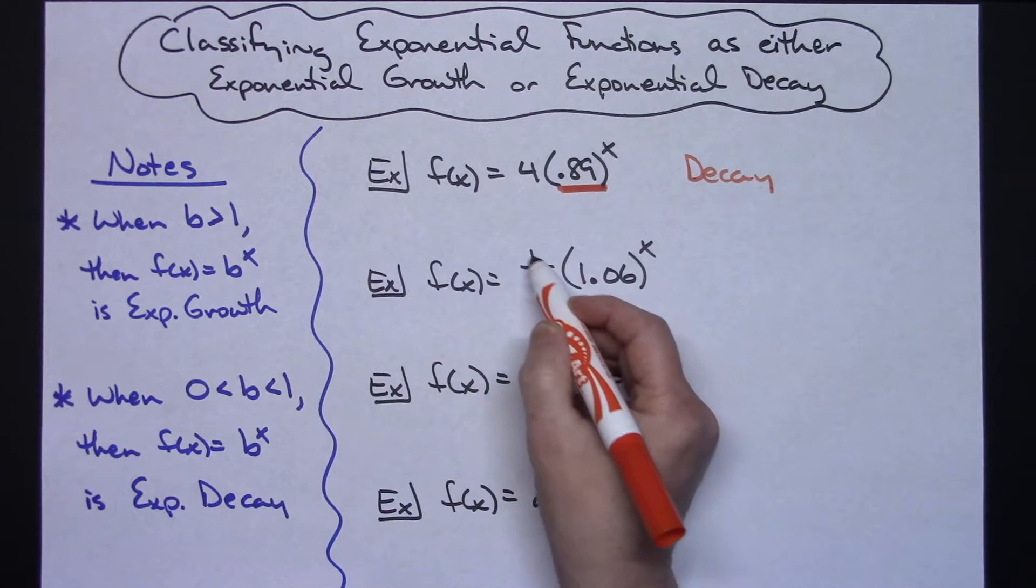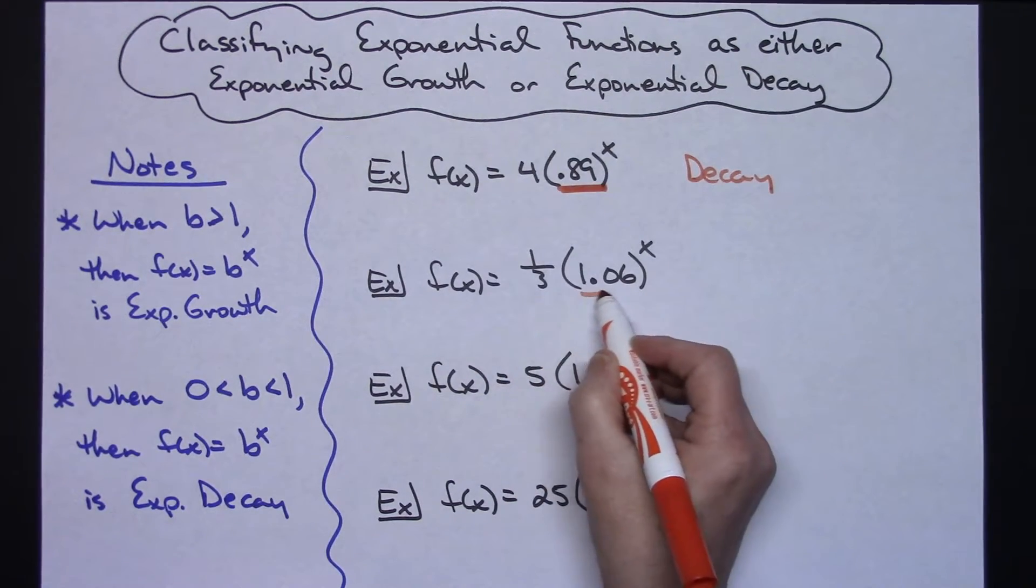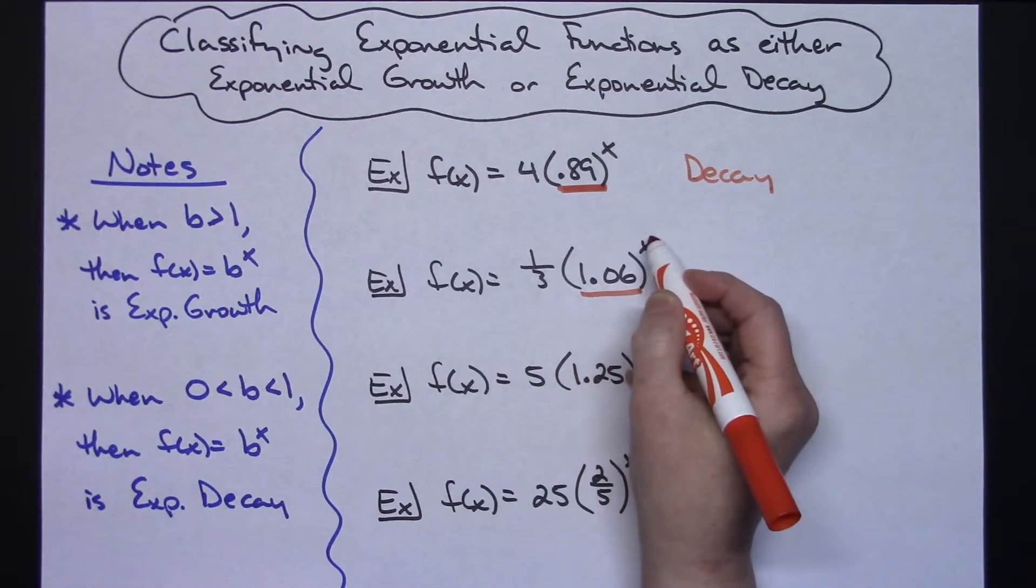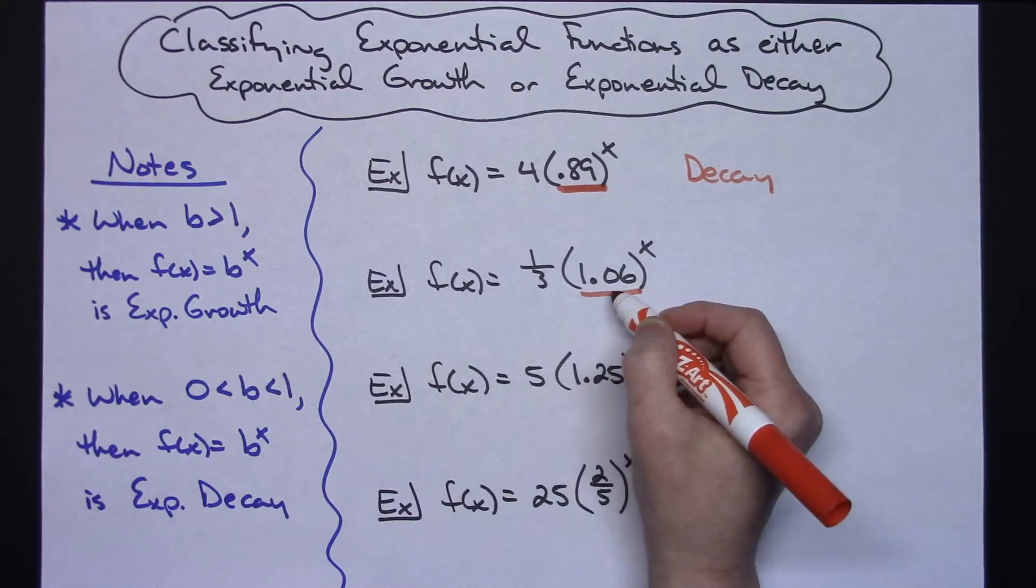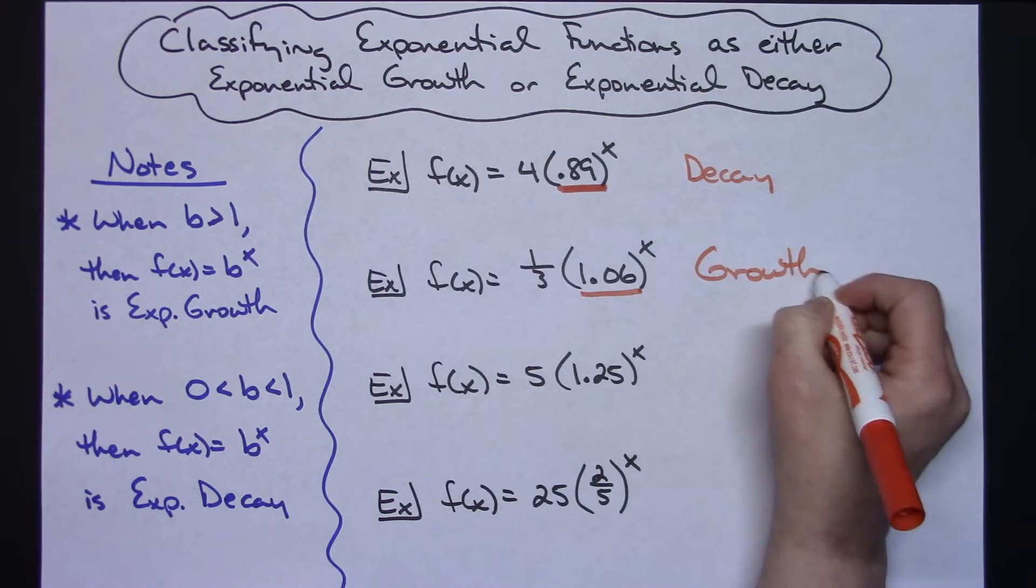Looking at the second example again I have a one third out here but that's not the base. The base is the 1.06 raised to the x power. That is a base greater than 1 so this is an exponential growth problem.